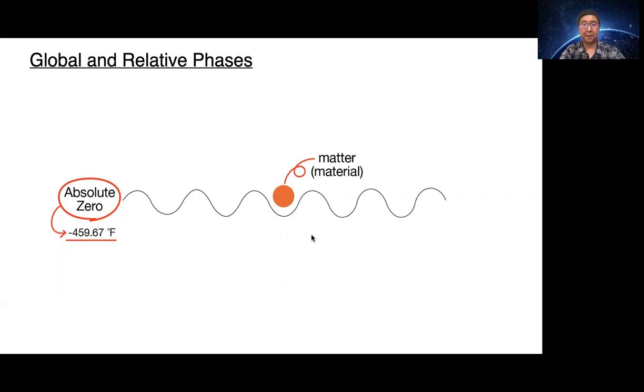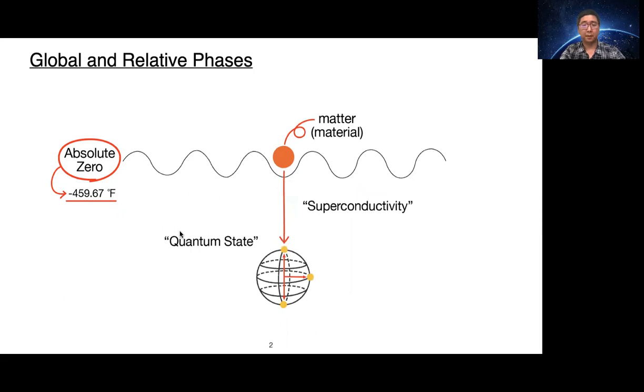Let's consider placing some metal or material in the absolute zero temperature, which is negative 459.67 Fahrenheit. It is very cold. Then the material conveys superconductivity in which electrical resistance disappears.